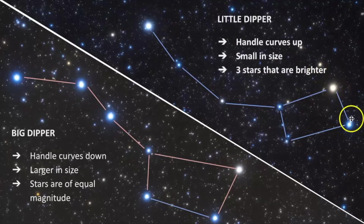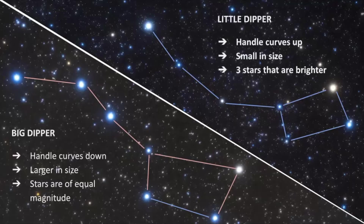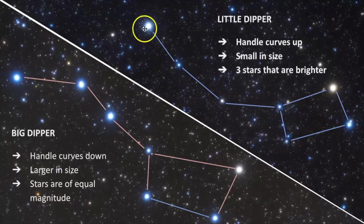In the Little Dipper, only three of the stars appear to be brighter, where the other four are very difficult to see. We'll get some practice later on with the fact that you can really only see three of the seven stars in the Little Dipper pattern. The handle also appears to curve in a different direction when compared to the Big Dipper, and it's definitely smaller in size. So these are the three main differences. Now let's get some practice identifying each — or rather asterism, because the Big Dipper and the Little Dipper are not true constellations; they are asterisms.